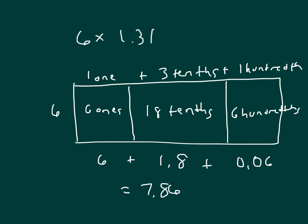Adding those together I get 7.86. Solving this numerically, 1.31 times 6: 6 times 1 is 6, 6 times 3 is 18, 8 regroup the 1, 6 times 1 is 6 plus 1 is 7. So I do get the same answer either way that I show my work. This is breaking it apart into an area model.